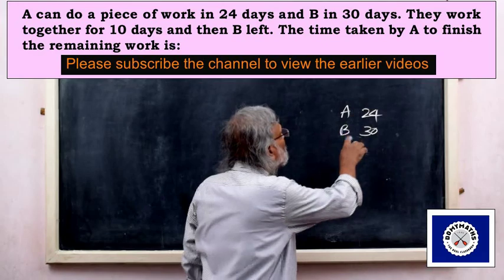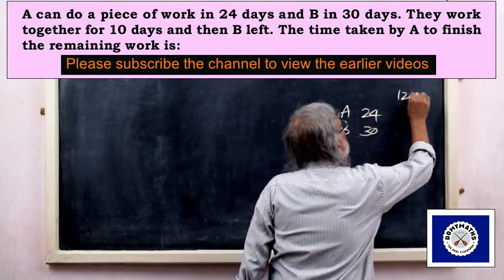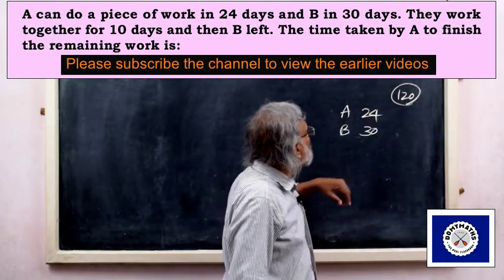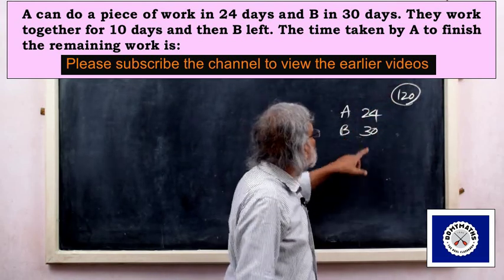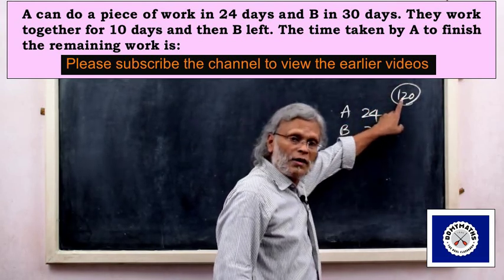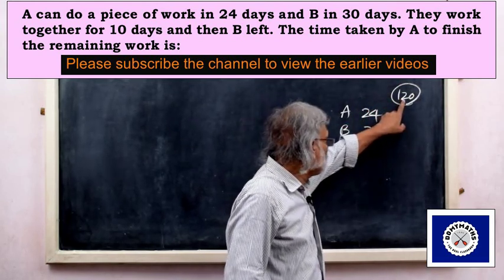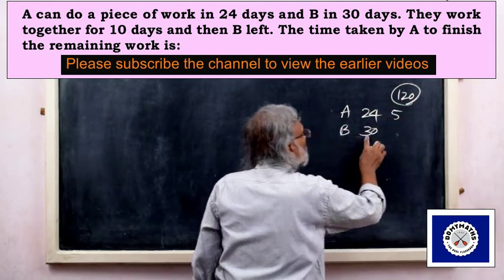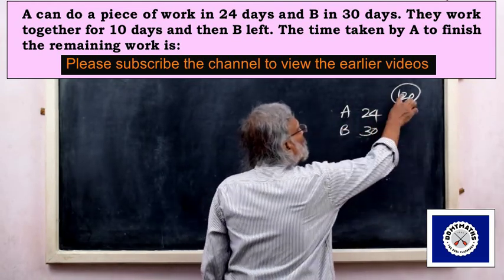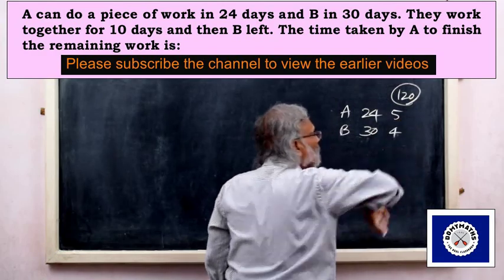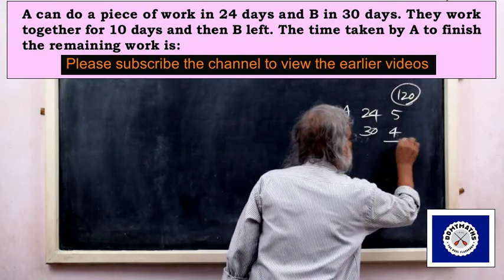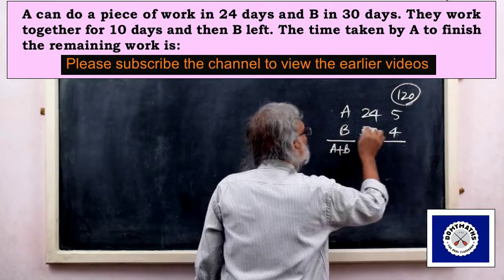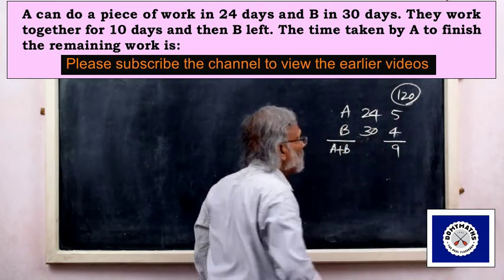LCM of 24 and 30 is 120. So 120 divided by 24 gives 5, and 120 divided by 30 gives 4. Combined efficiency per day is 5 plus 4 equals 9.